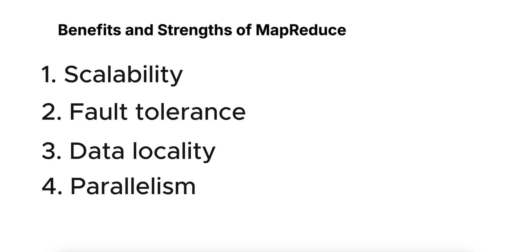Number four is parallelism. MapReduce can distribute tasks across multiple nodes, allowing for parallel processing of data. Mappers and reducers can run concurrently across a cluster, significantly speeding up large computations.